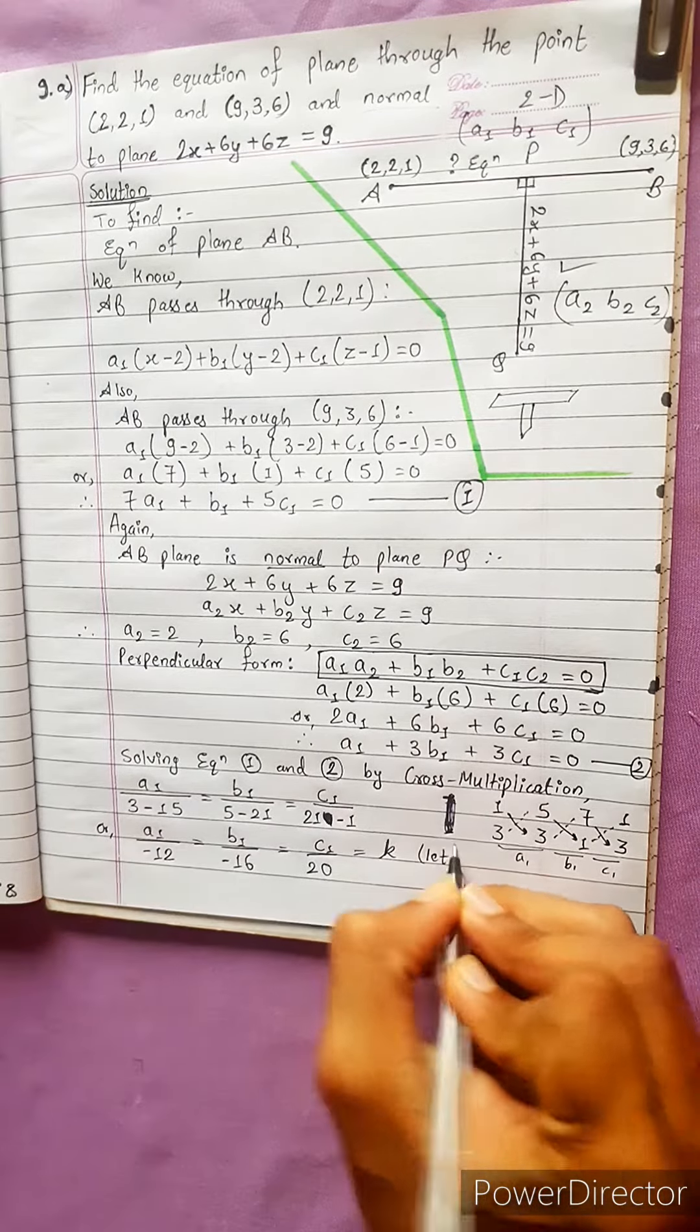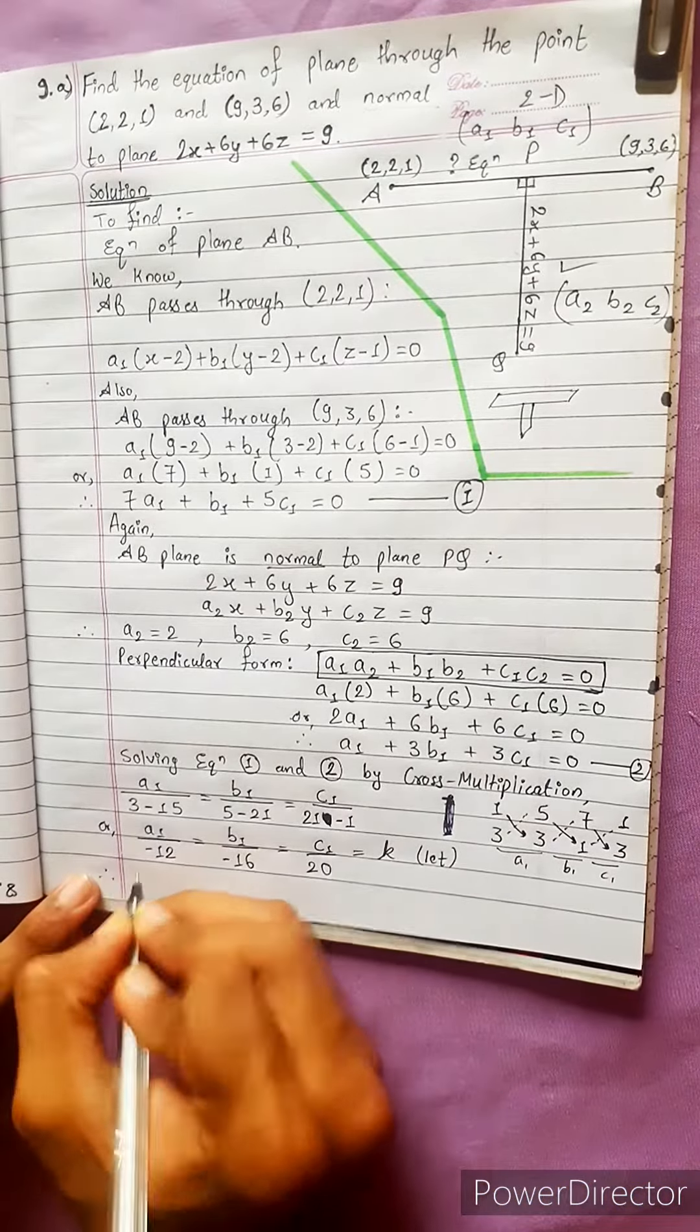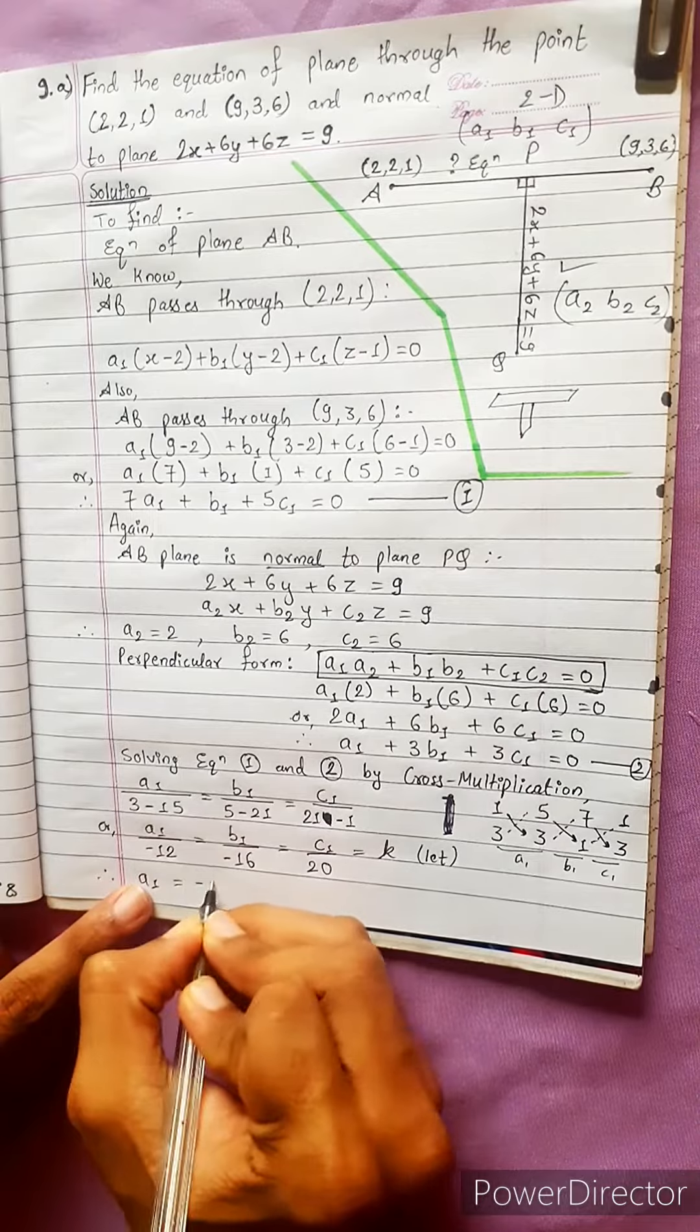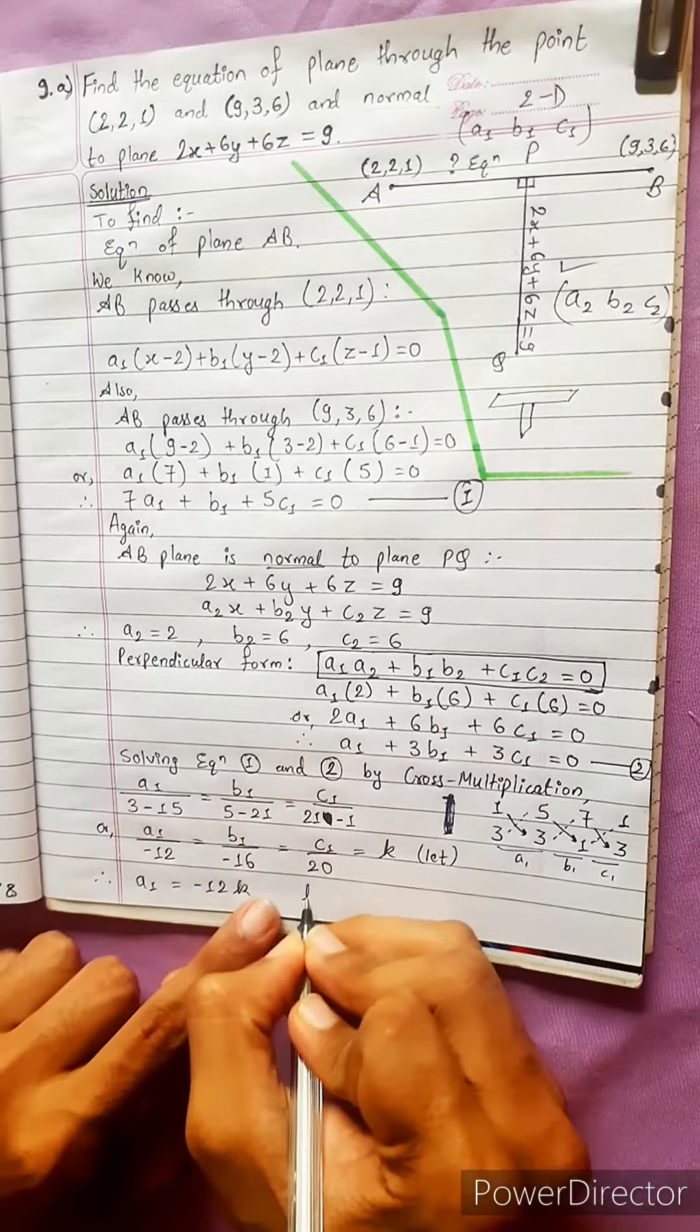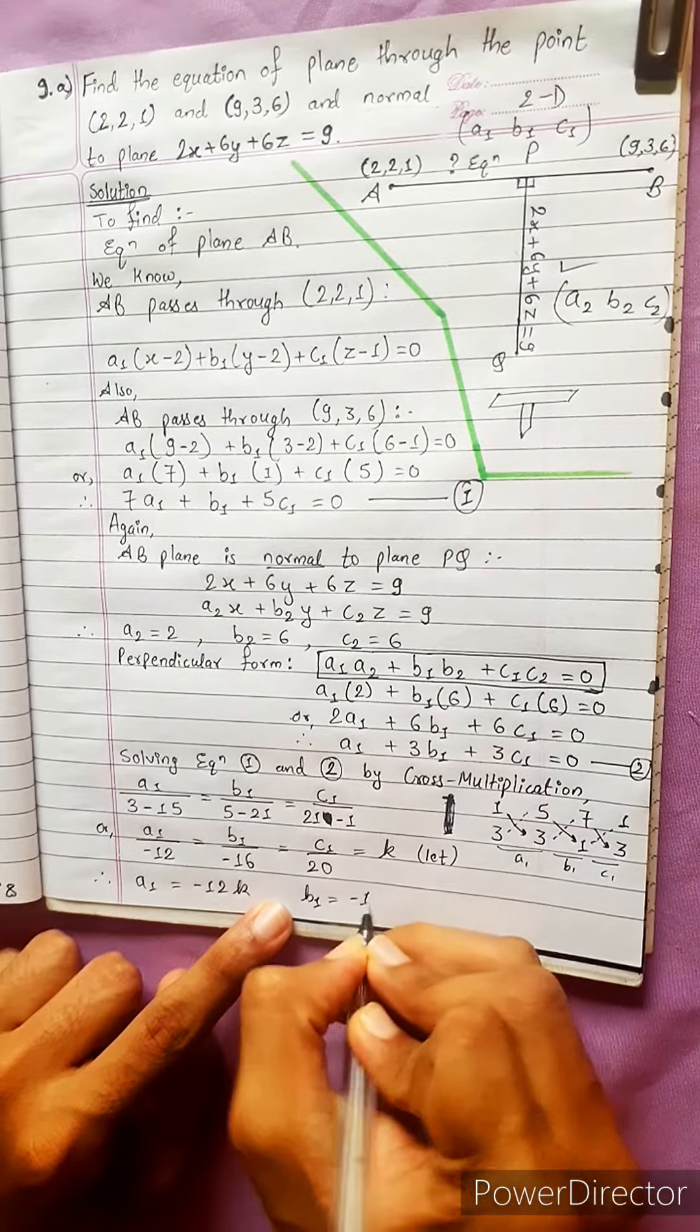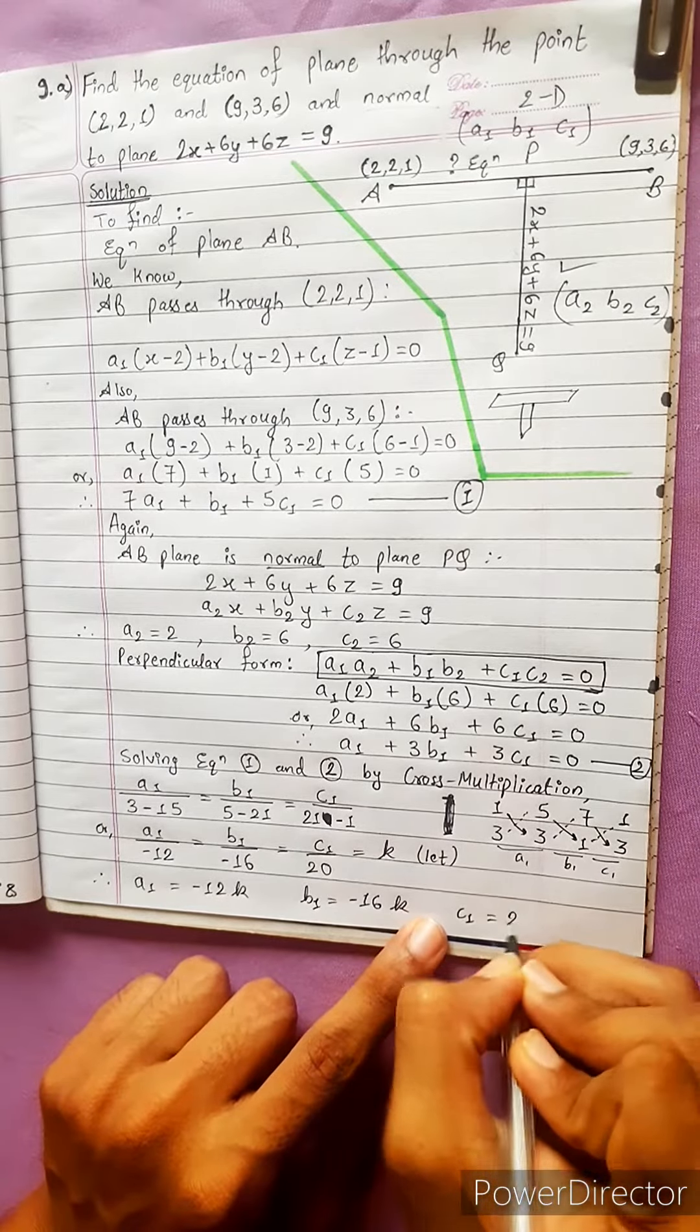Writing with value K: A1 = -12K, B1 = -16K, C1 = 20K.